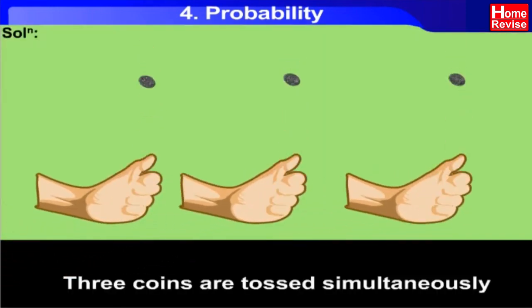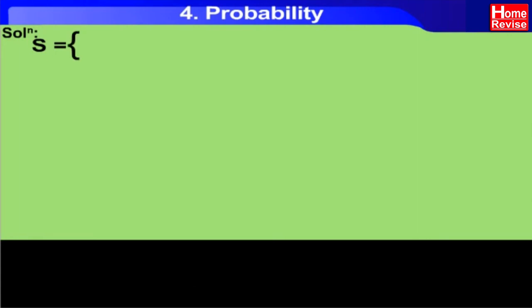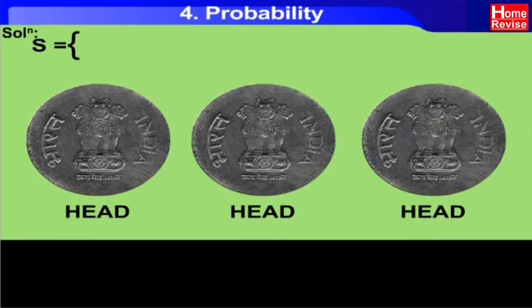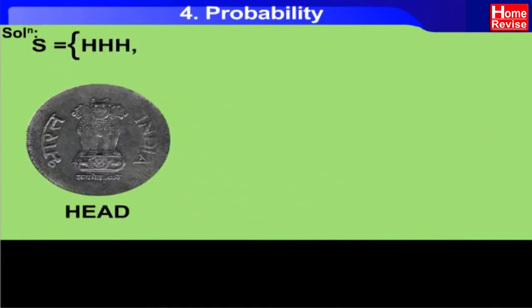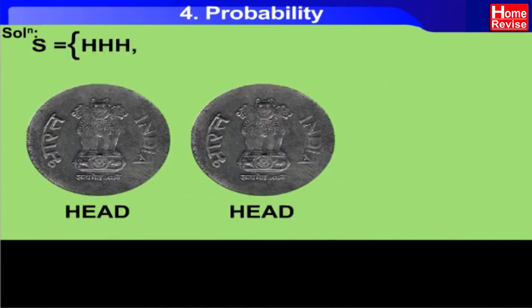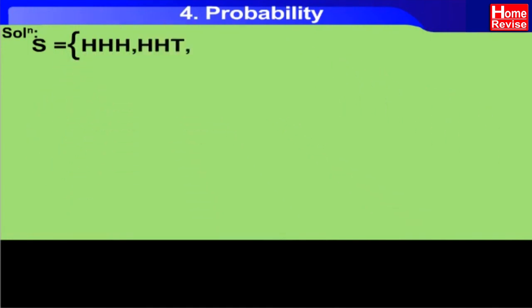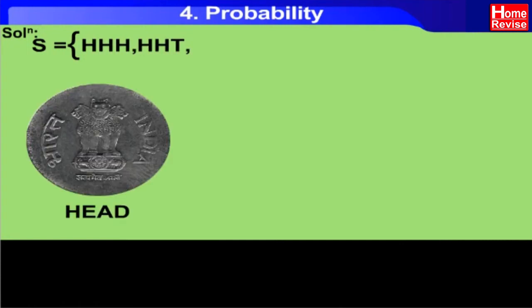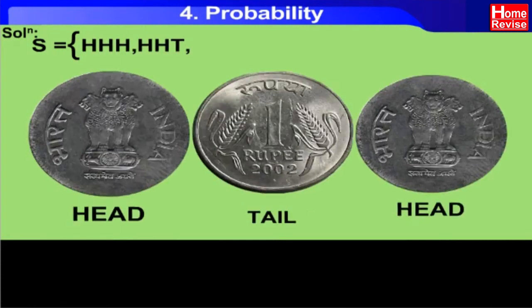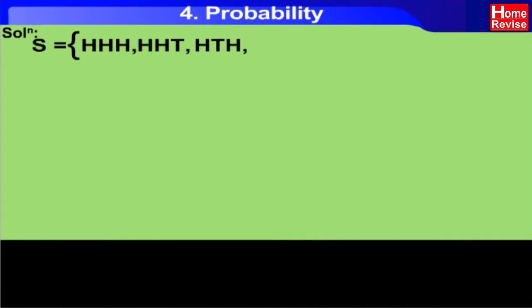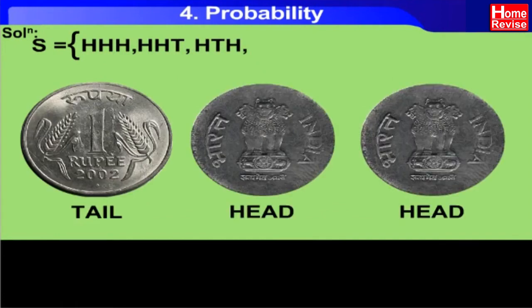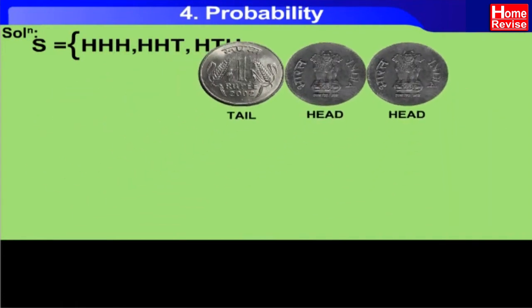Solution. Three coins are tossed simultaneously. Sample space S is equal to: { HHH, HHT, HTH, THH,